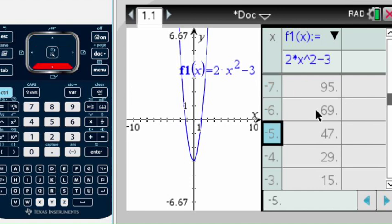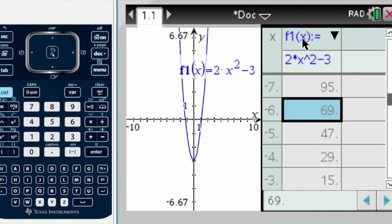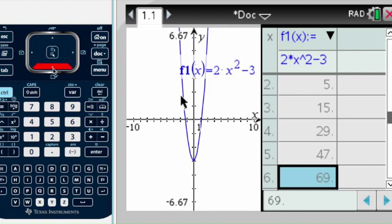On the other side, this column you have f1 of x, so this is pretty much your function - 2x to the second power minus 3. This is just reminding you of your function. You can arrow up and down to see all your function values or y values as well.